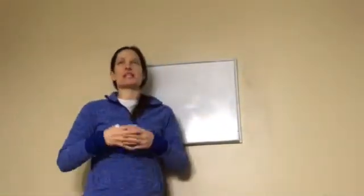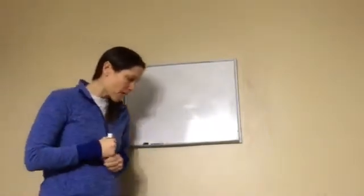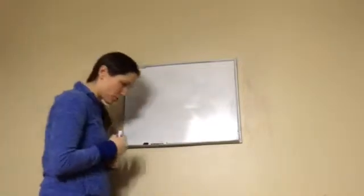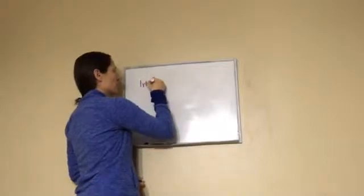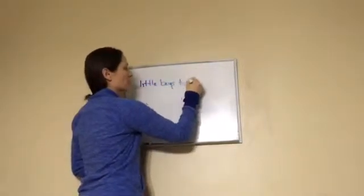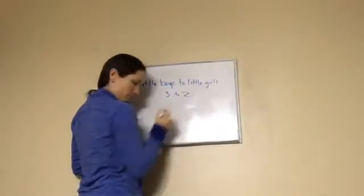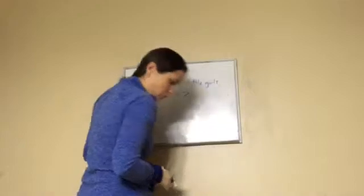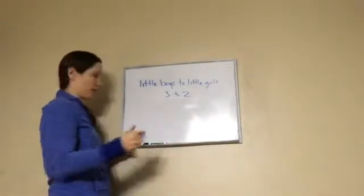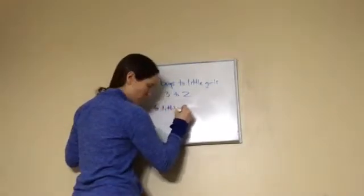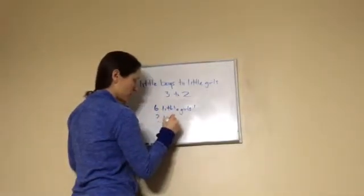Now, what I'm going to do is give you a word problem. So listen and listen for the ratio. The ratio of little boys to little girls in the nursery was 3 to 2. So little boys to little girls is 3 to 2. If there were 6 little girls total, how many little boys were there? 6 little girls total, how many little boys?